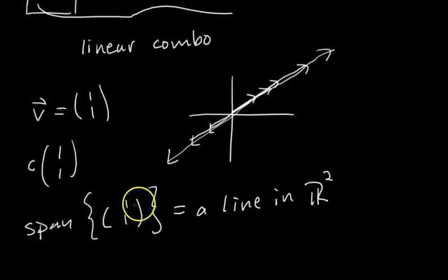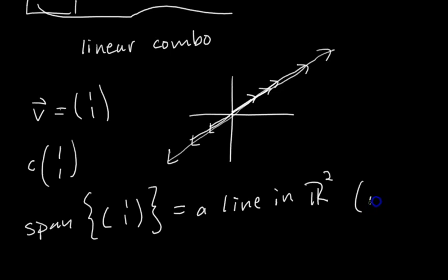So we say the span of [1, 1] is a line in R2 — specifically the line y equals x.